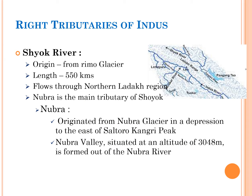Shoyak river originated from the Rimo glacier and is about 550 kilometers in length. This river marks the southeastern fringe of the Karakoram ranges by forming a V-shaped bend around it, and flows through the northern Ladakh region. Nubra is the main tributary of the Shoyak river, originating from Nubra glacier in a depression to the east of Saltoro-Kangari peak. Nubra valley, situated at an altitude of 3,048 meters, is formed by the Nubra river.